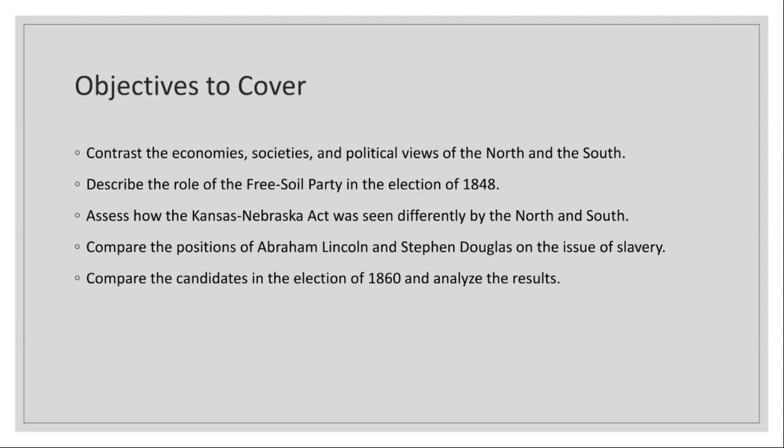In contrast, the South relied heavily on agriculture, particularly the cultivation of cotton, tobacco, and other cash crops, sustained by the labor of enslaved people. This agrarian society shaped the Southern economy, which was centered around plantation agriculture and a predominantly rural, hierarchical society. Politically, the North tended to support a more centralized government and was largely against the expansion of slavery into new territories, whereas the South advocated for states' rights and the preservation and expansion of slavery.